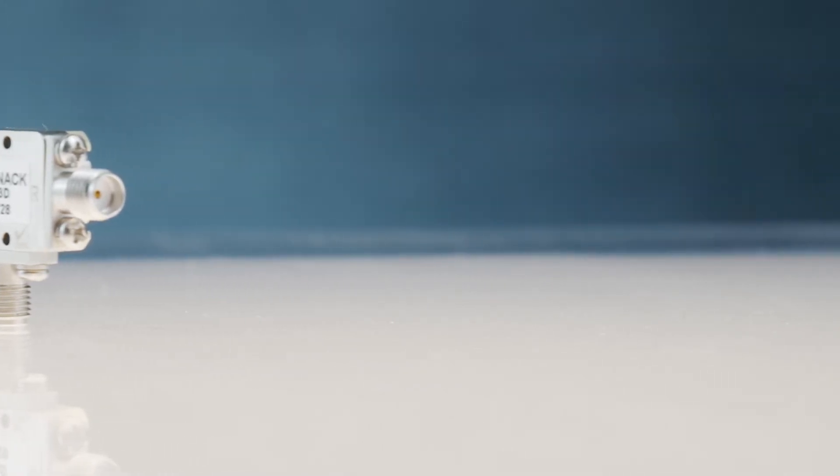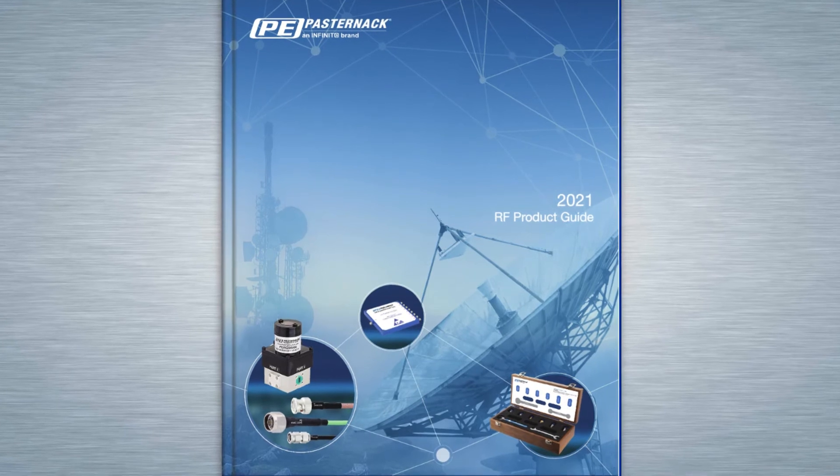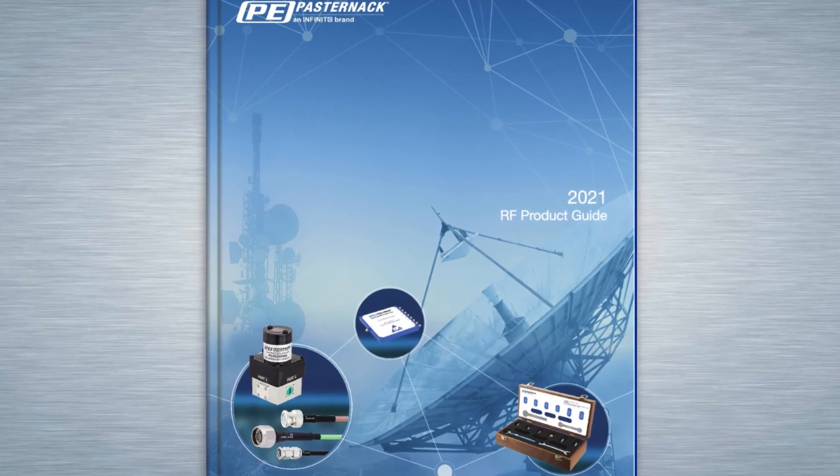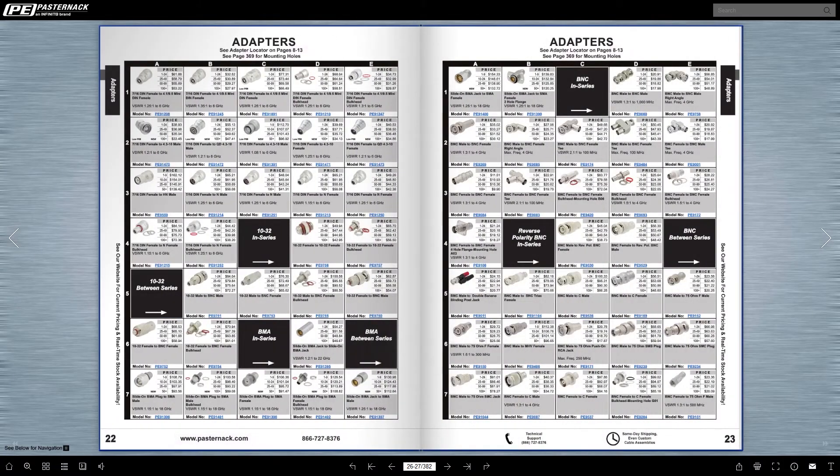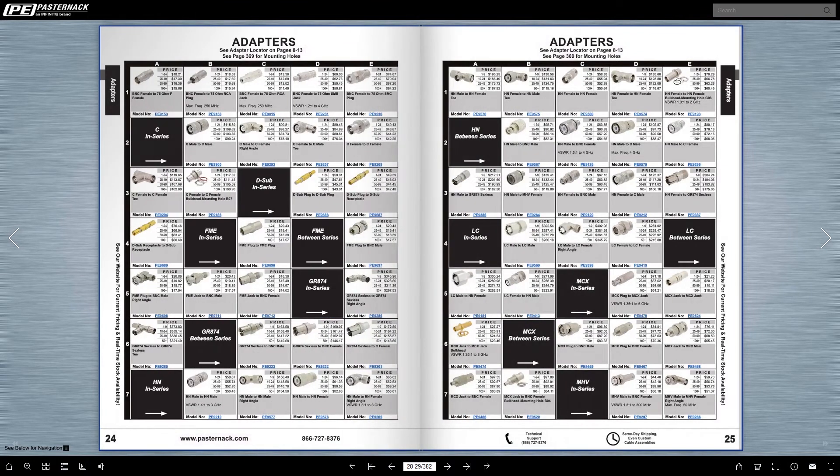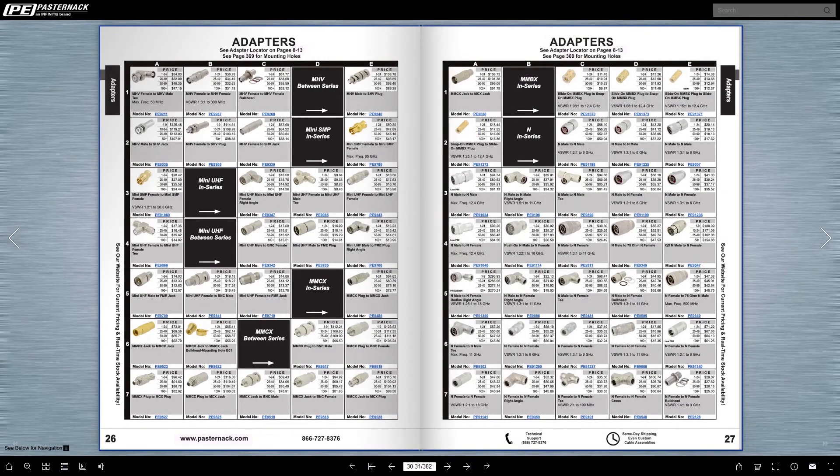Whether you're an engineer or purchaser, Pasternak is your one-stop shop for 746 adapter parts, over 1,700 connector parts, and 86 different cable types.